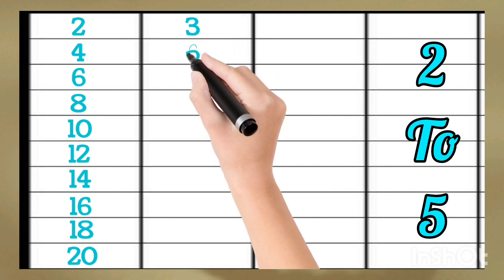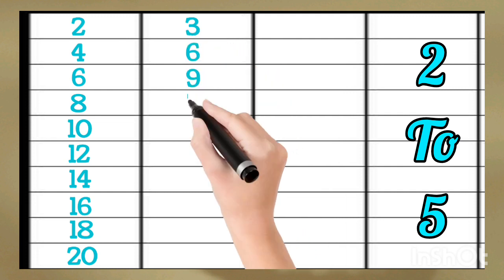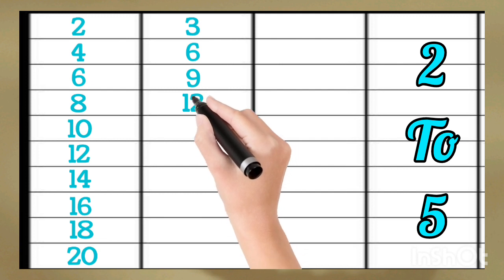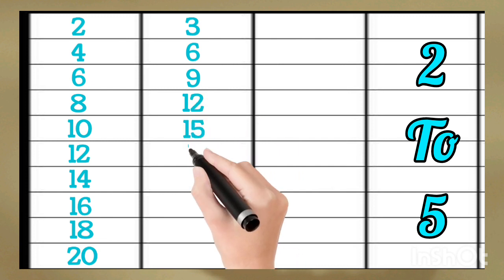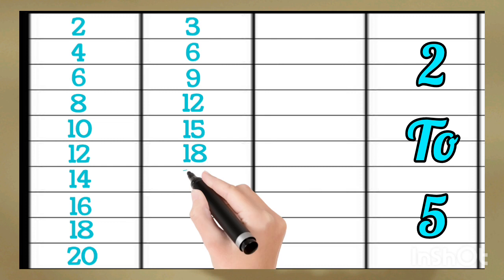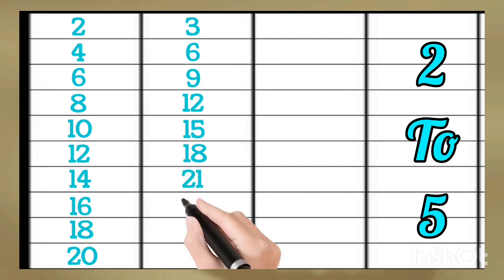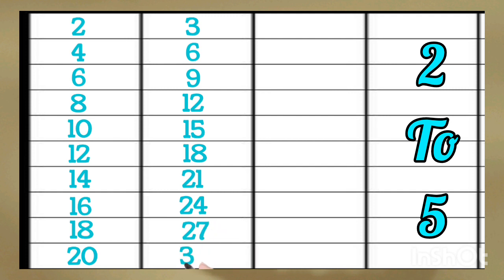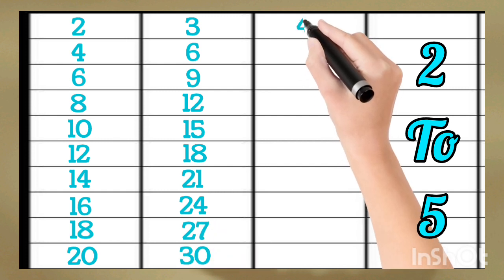3 times 2 is 6, 3 times 3 is 9, 3 times 4 is 12, 3 times 5 is 15, 3 times 6 is 18, 3 times 7 is 21, 3 times 8 is 24, 3 times 9 is 27, 3 times 10 is 30. 4 times 1 is 4,